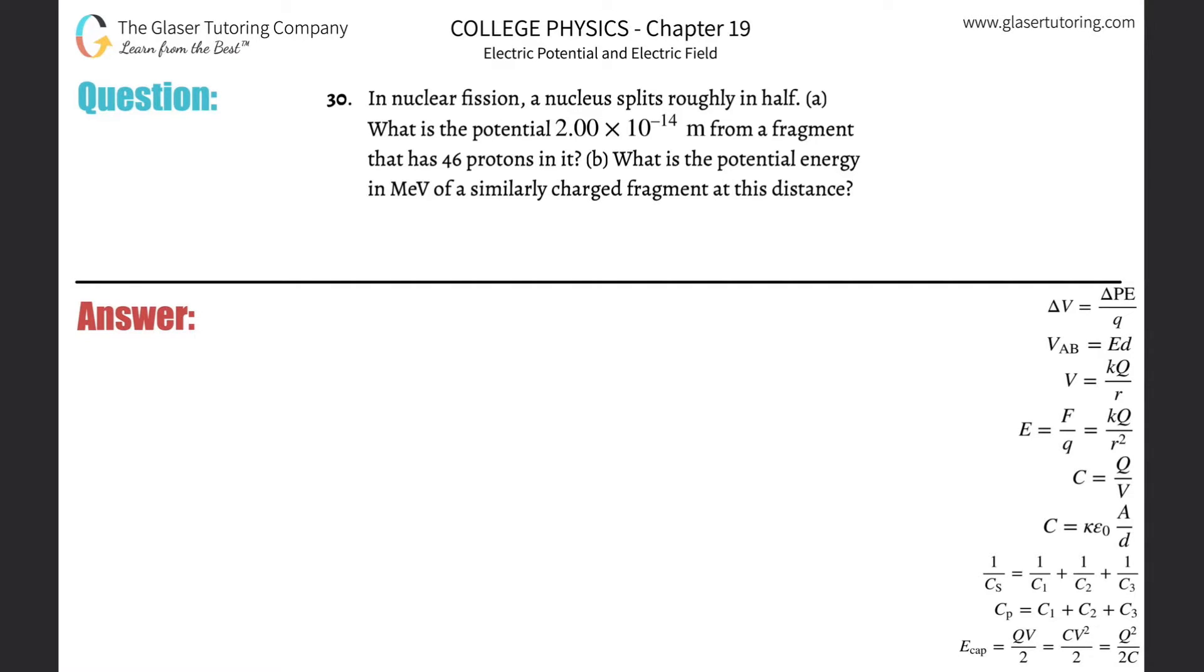Number 30. In nuclear fission, a nucleus splits roughly in half, letter A. What is the potential 2 times 10 to the minus 14 meters from a fragment that has 46 protons in it? Okay, so here's the fragment.